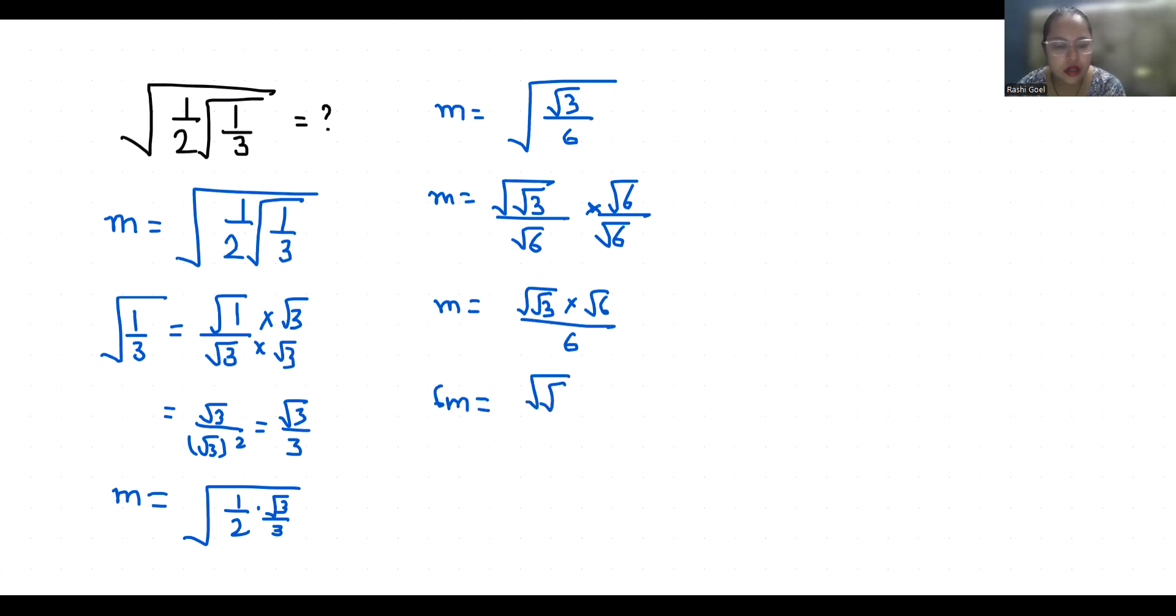Now if I do squaring both sides, it becomes 36 m square, and with the help of this square, square root removes, so root 3 times 6. Now I'm going to divide both sides by 6, so it becomes 6 m square.